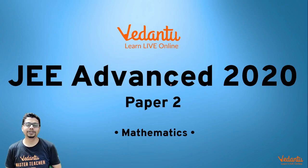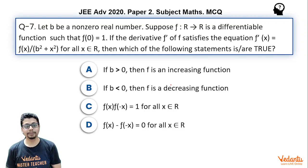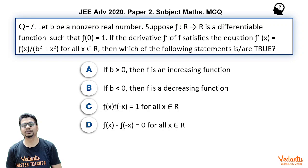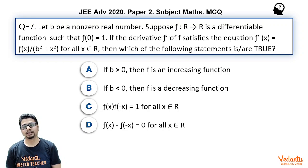Hi everyone, I'm Shubham Javar, a master teacher at Vedantu. We are discussing JEE Advanced 2020 Paper 2 Mathematics. The question for this video: let b be a nonzero real number, suppose there is a function f whose domain and co-domain are all real values, f is differentiable, f(0) = 1, and f'(x) = f(x) / (b² + x²) for all real x.